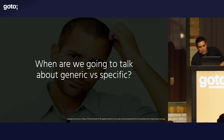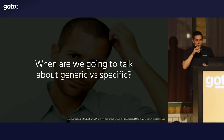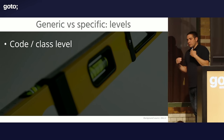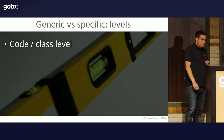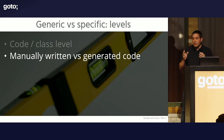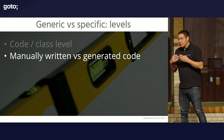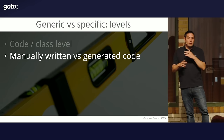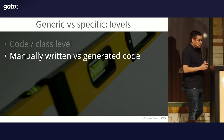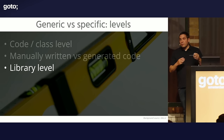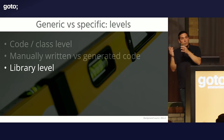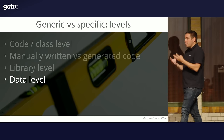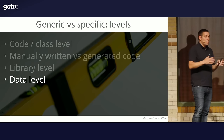Now let's start on generic versus specific. Think about those levels where we can make choices. On the code and class level: is this going to be a reusable class or not? You can have the same idea about manually written versus generated code. If code is generated, I don't mind having it duplicated all over the place because it's generated and can be rebuilt. On the library level: am I going to build something myself, use a library, or extract generic logic to a reusable library?